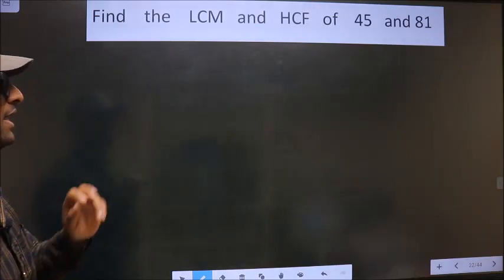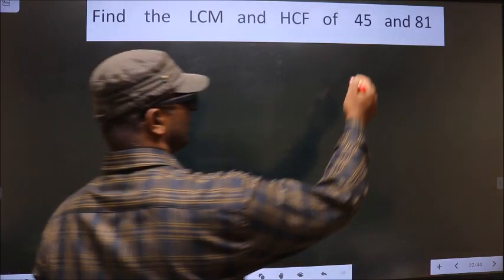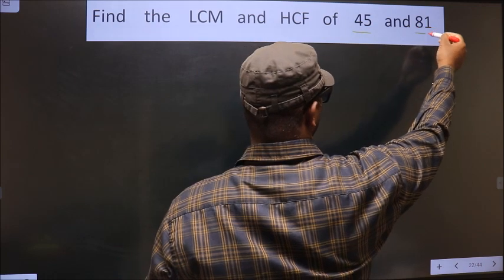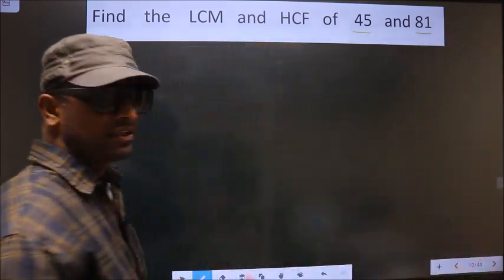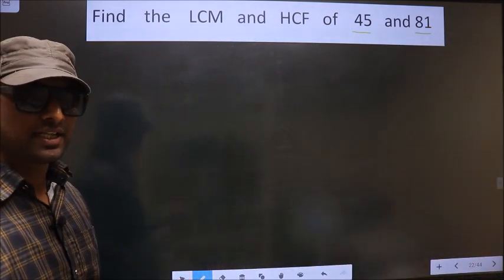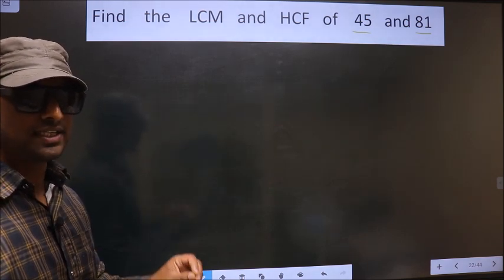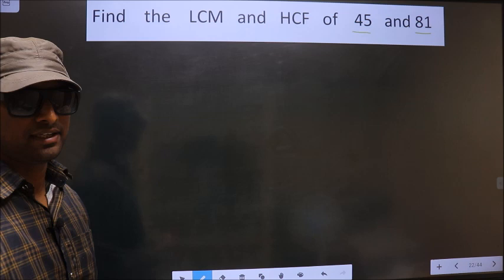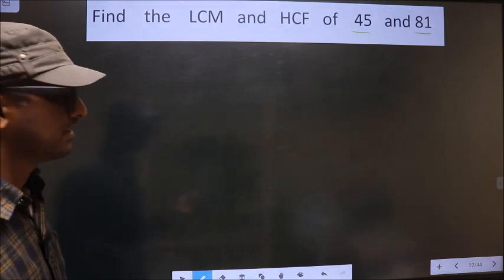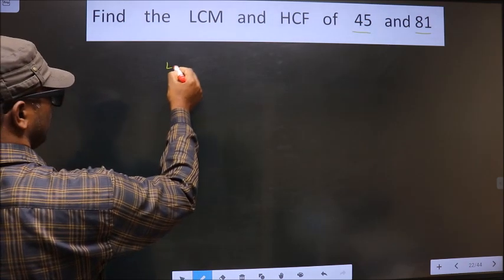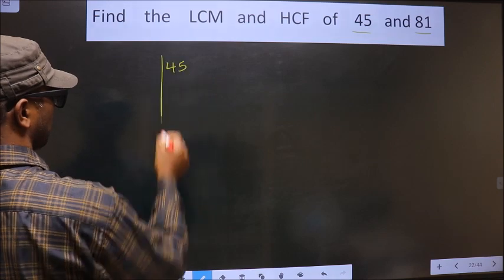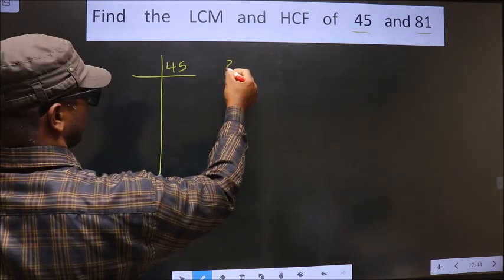Find the LCM and HCF of 45 and 81. To find the HCF and LCM, first we should do the prime factorization of each number separately. 45, 81.